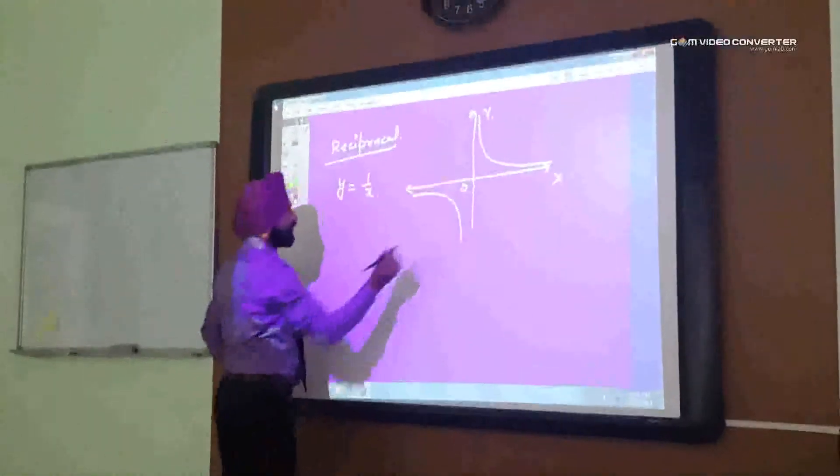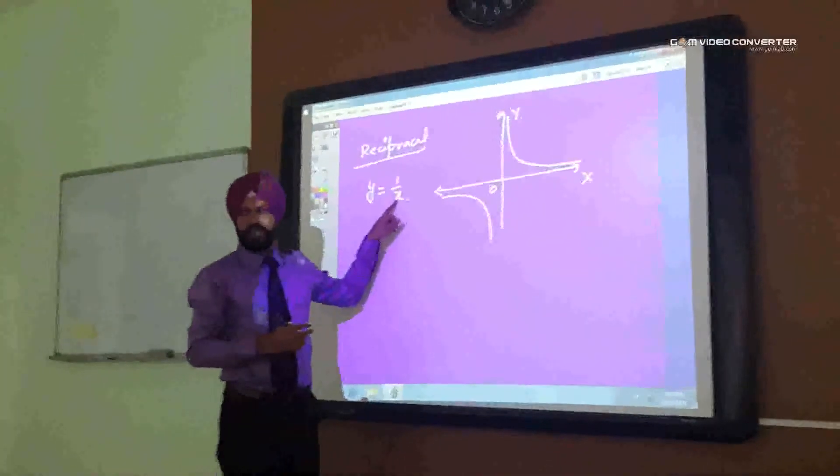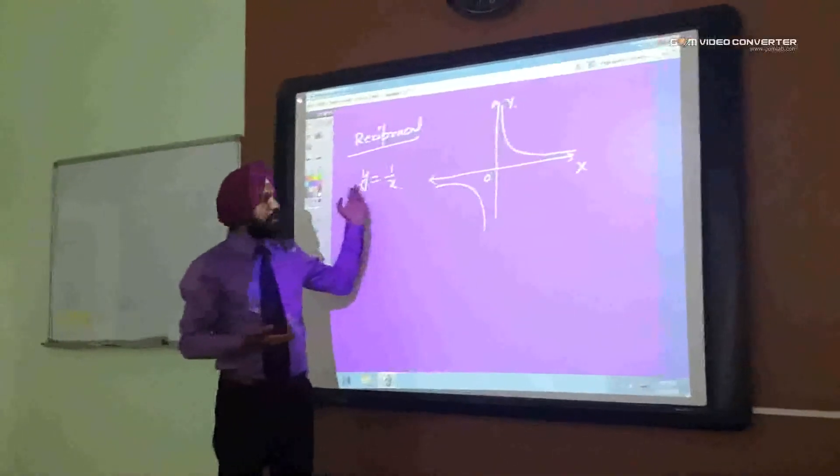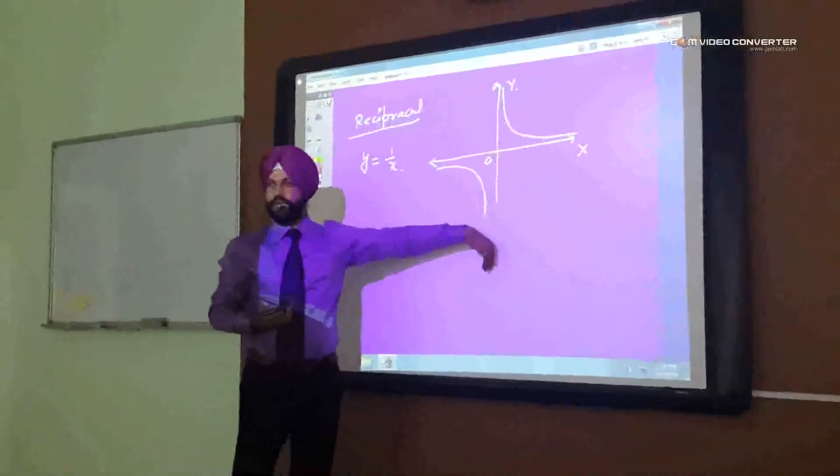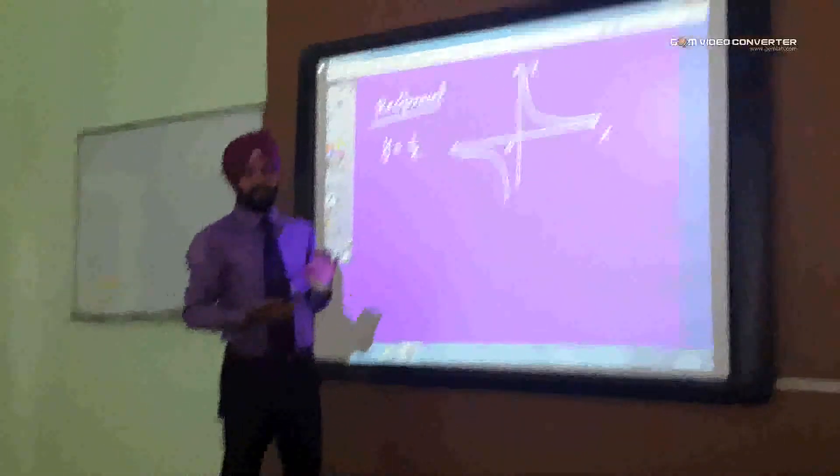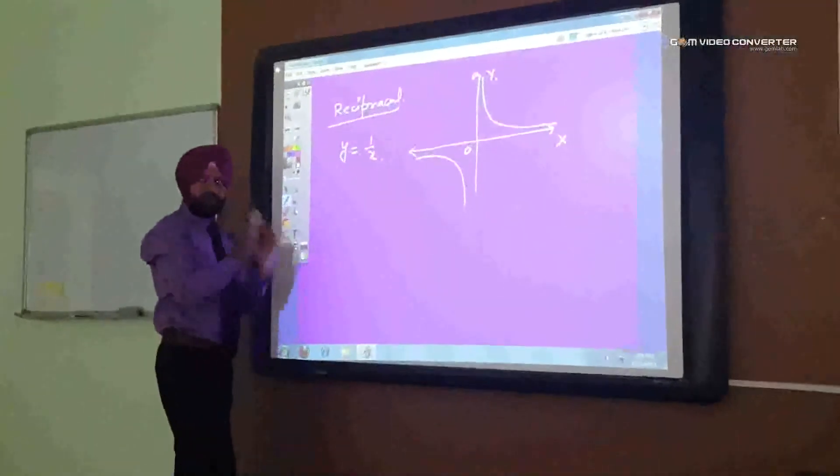And, symmetric on other side also. Because, if x is positive, y is also positive. If x is negative, so y is also negative. Okay? So, this is the standard curve. This is 0, x and y.